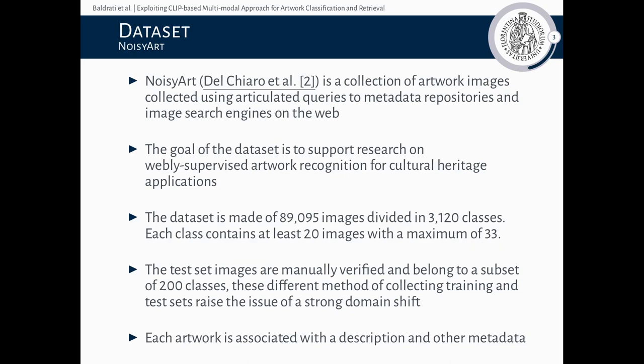NoisyArt is an artwork dataset crawled from multiple resources on the web, like Google Images, DBpedia, Flickr, and so on. According to the creators of the dataset, the goal of NoisyArt is to support research on web-supervised artwork recognition for cultural heritage applications. The dataset contains about 89,000 images belonging to 3,000 classes. In contrast to the training and validation set, the test images have been manually verified and therefore do not contain any sort of label noise. This domain shift sets a non-trivial challenge that must be handled by the machine learning models. Finally, each artwork is associated with a text description, which, using the CLIP encoders, allowed us to perform experiments in a zero-shot classification setting.